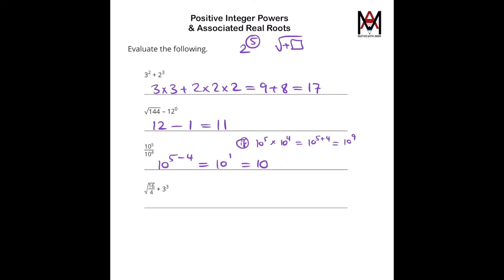The next question, square root of 16 over 4 plus 3 cubed, that would be square root of 4, as 16 divided by 4 is 4, plus 3 times 3 times 3, that's 27. So this is simply 2 plus 27, which equals to 29.